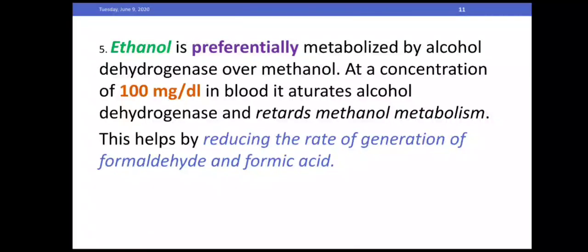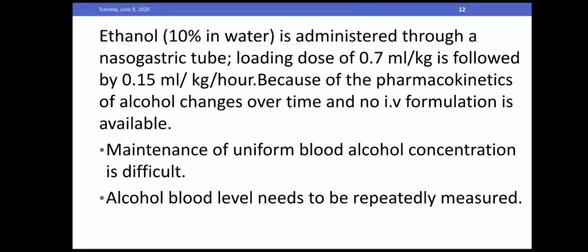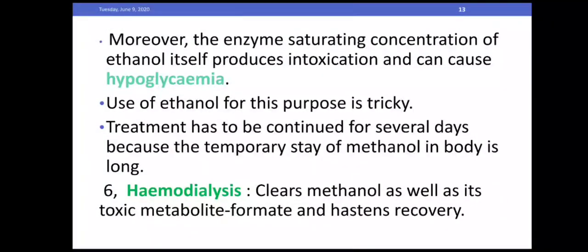Ethanol is preferentially metabolized by alcohol dehydrogenase over methanol. At a concentration of 100 mg per deciliter in blood, it saturates alcohol dehydrogenase and retards methanol metabolism, reducing the rate of generation of formaldehyde and formic acid. Ethanol is administered via a nasogastric tube with a loading dose of 0.7 ml per kg, followed by 0.15 ml per kg per hour. Maintenance of uniform blood alcohol concentration is difficult because of changing pharmacokinetics and lack of an IV formulation. Blood alcohol level needs to be repeatedly measured; moreover, the enzyme-saturating concentration of ethanol itself produces intoxication and can cause hypoglycemia. Treatment must be continued for several days because of the long half-life of methanol.